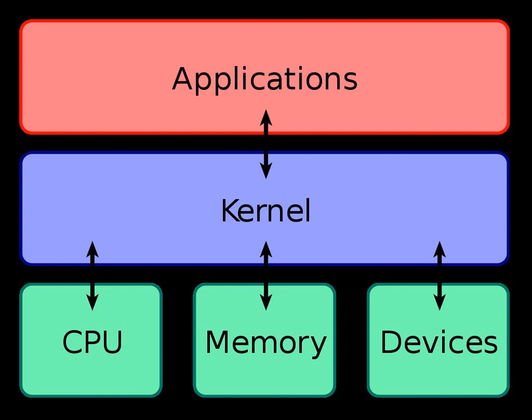The kernel is a program, running in supervisor mode, that acts as a program loader and supervisor for the small utility programs making up the rest of the system, and to provide locking and I/O services for these programs. Beyond that, the kernel didn't intervene at all in user space. Over the years the computing model changed, and Unix's treatment of everything as a file or byte stream no longer was as universally applicable as it was before.